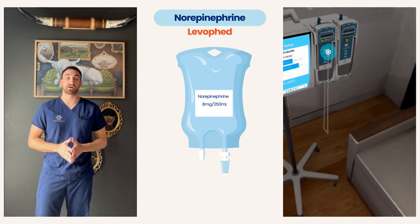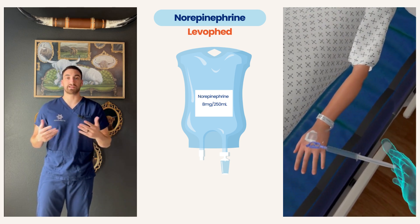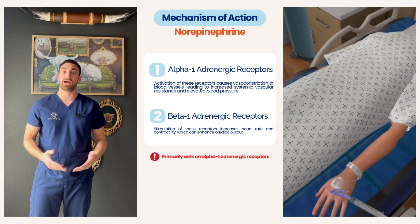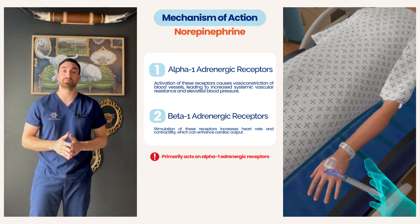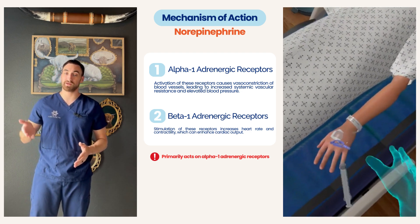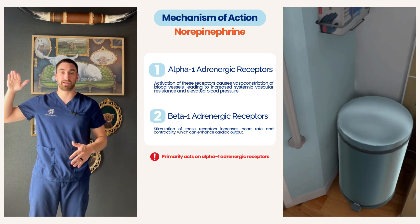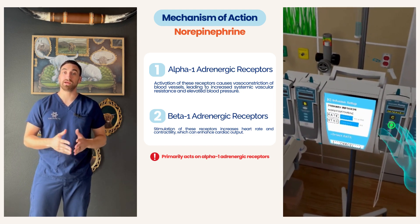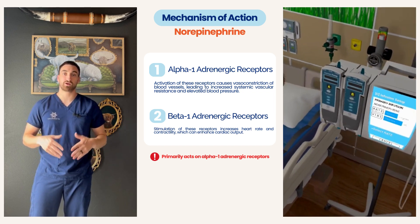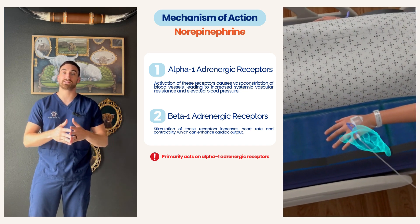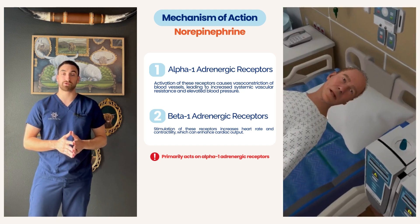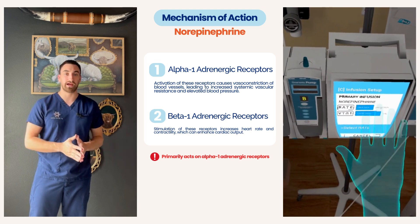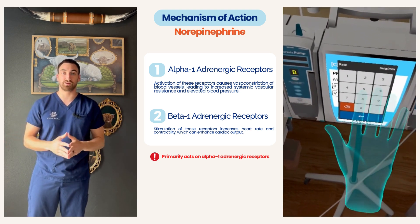We're first going to describe norepinephrine — its mechanism of action, adverse effects, complications, and contraindications. To put it simply, our bodies have adrenergic receptors responsible for balancing our sympathetic and parasympathetic nervous systems. Our sympathetic raises blood pressure and heart rate; our parasympathetic is calming. Norepinephrine mainly impacts the alpha-1 adrenergic receptor, causing direct systemic vasoconstriction, increasing blood pressure. It also impacts beta-1 receptors, increasing heart rate and contractility, but not as profoundly as its alpha-1 vasoconstriction effect on the peripheral vascular system.